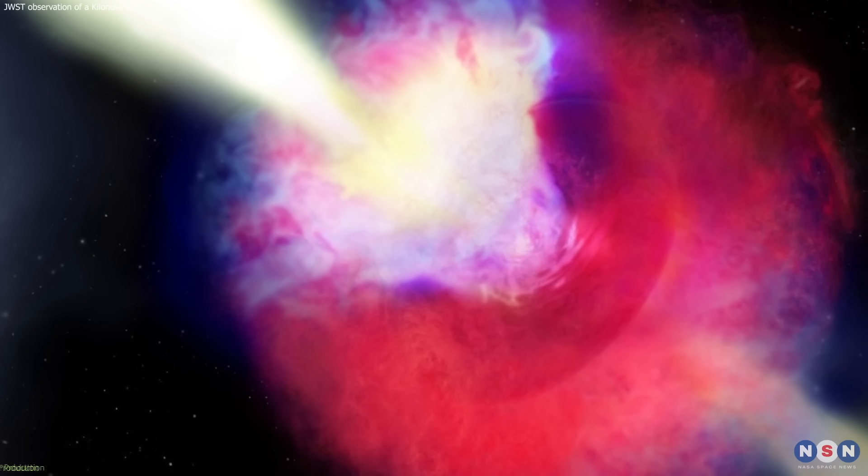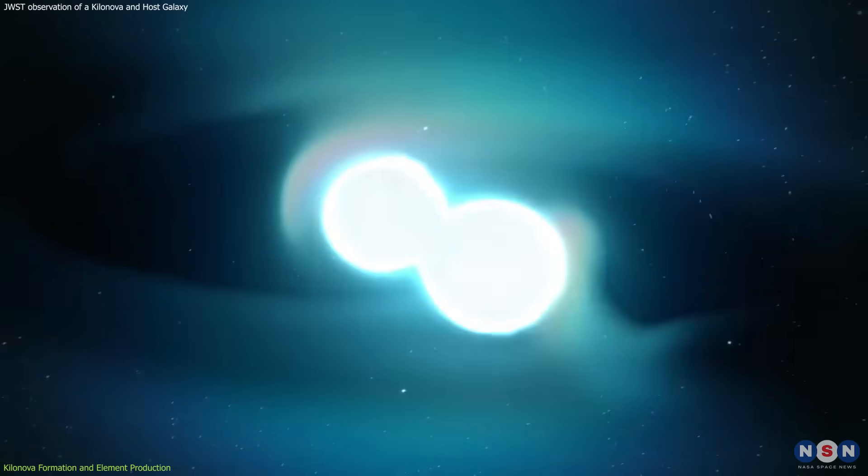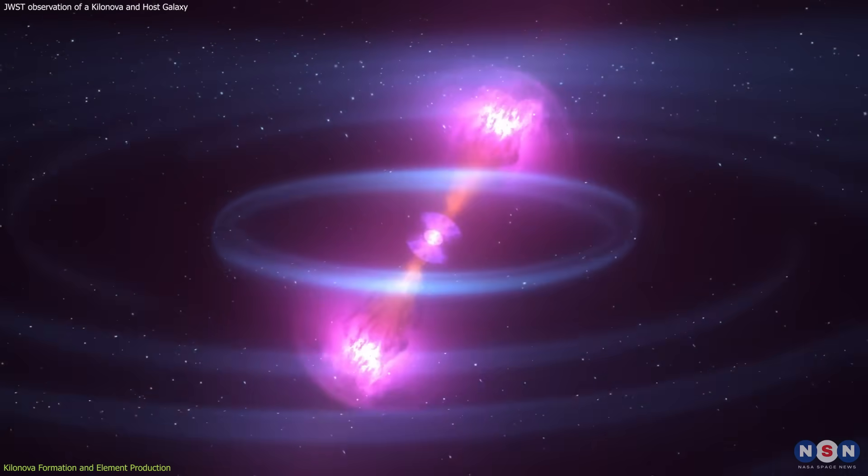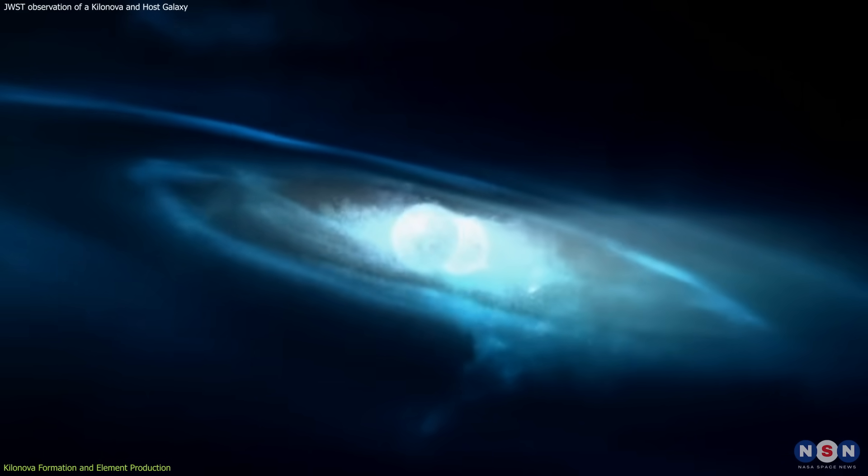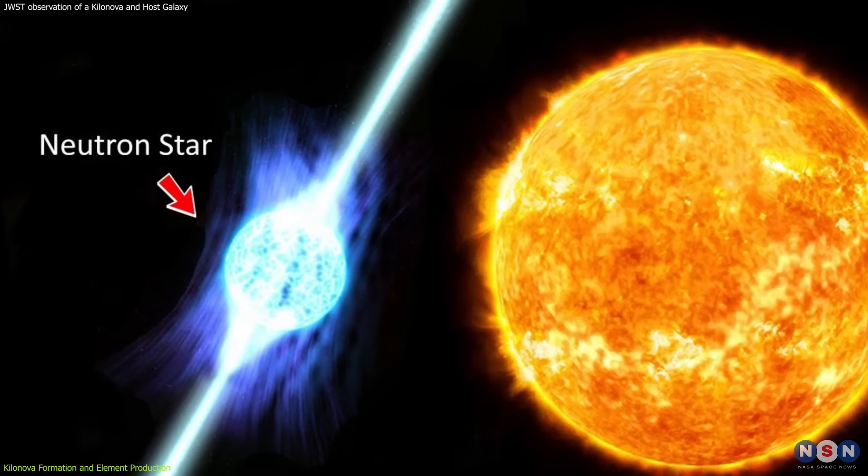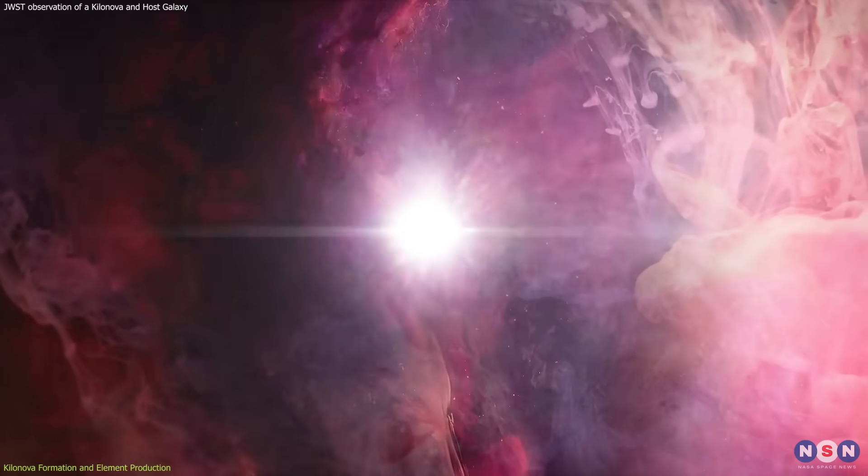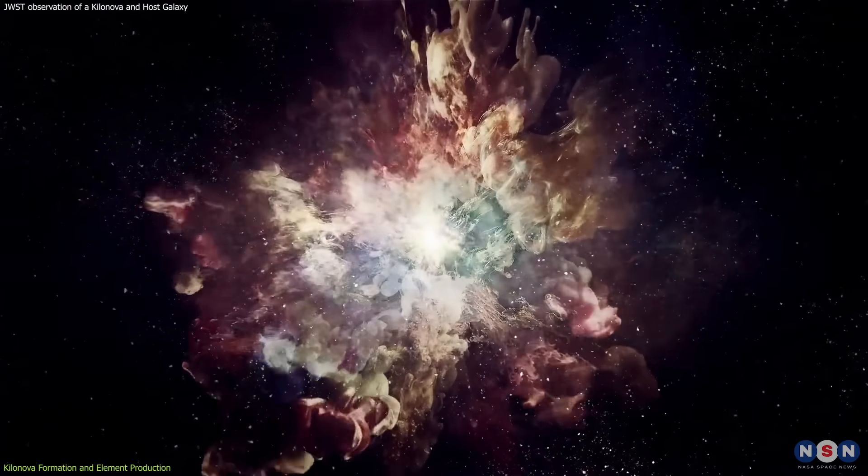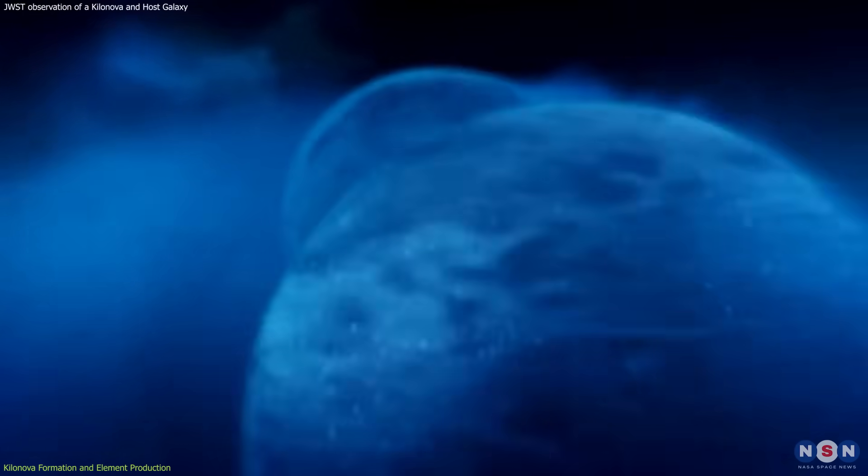A kilonova is a rare type of gamma ray burst that is caused by the merger of two neutron stars. Neutron stars are the densest objects in the universe, with masses comparable to the sun, but sizes comparable to a city. They are formed when massive stars explode as supernovas at the end of their lives, leaving behind their collapsed cores.